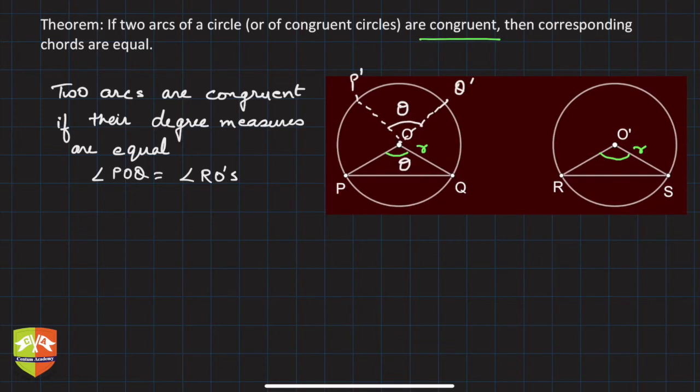Congruent arcs can be within the same circle or in two circles, but these two circles must be congruent. What are congruent circles? Two circles which can superpose on each other, that means two circles which have the same radii, are called congruent circles.